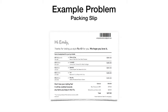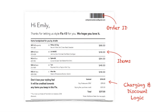So this is a picture of the pack slip — what you get in the box when you open it up. There's an order ID so the warehouse knows what it is, there are the items you're getting, and there's metadata like descriptions and prices. And then there's charging and discount logic: if you want to buy all five items, you get a discount. We want to show that to the customer so they get excited about buying everything.